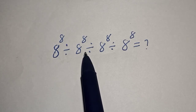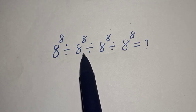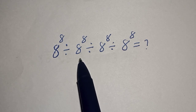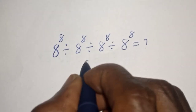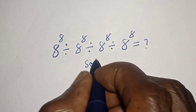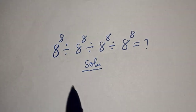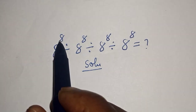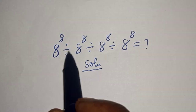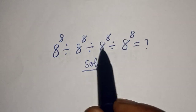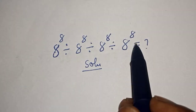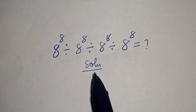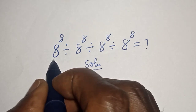Hello, welcome to Magic. In this class we want to evaluate this nice math question. Like, share, comment and subscribe. Solution: 8 to the power of 8 divided by 8 to the power of 8 divided by 8 to the power of 8 divided by 8 to the power of 8 is equal to what. Now let's work with this.